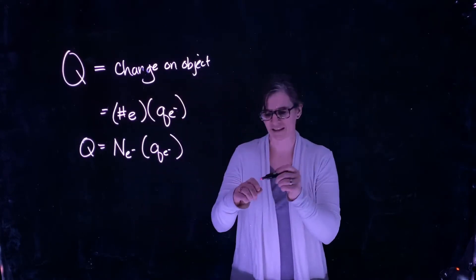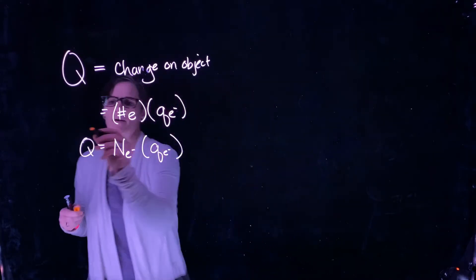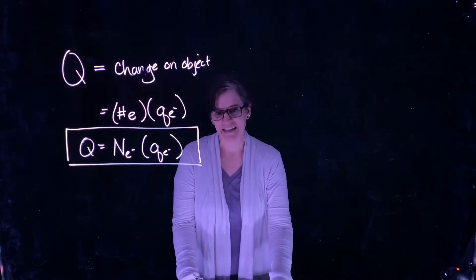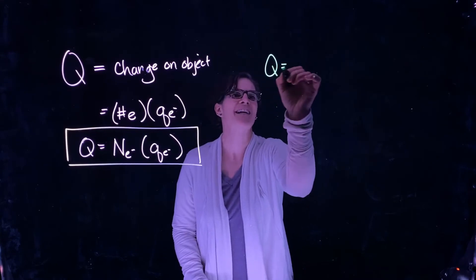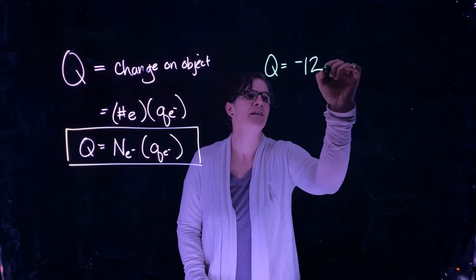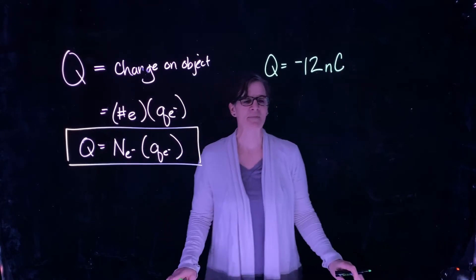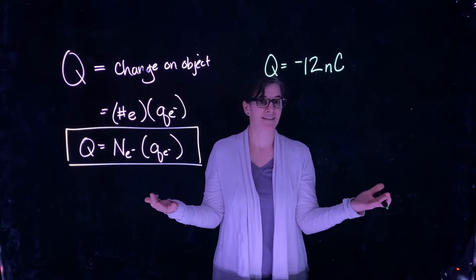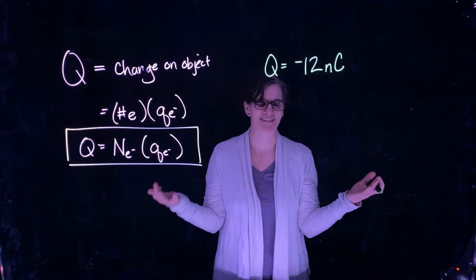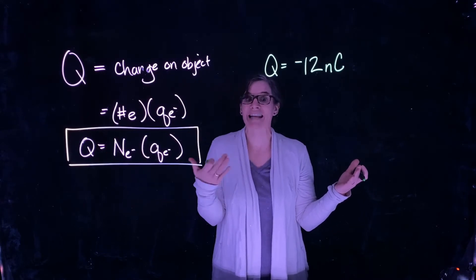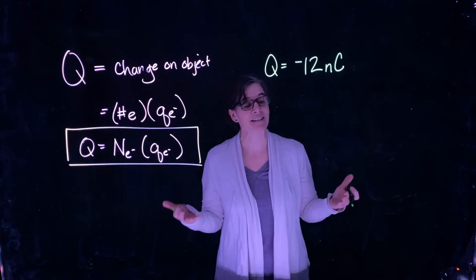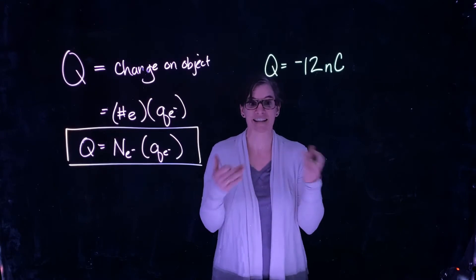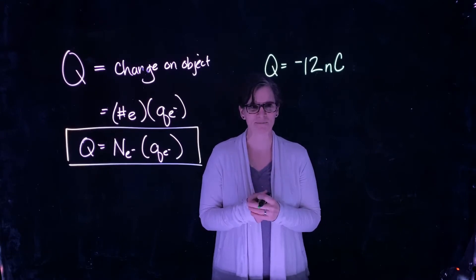Let's use that relationship to determine how many electrons are on an object if the charge on that object is negative 12 nanocoulombs. First, does that tell us we have an excess of electrons or a reduction of electrons? The charge is negative 12 nanocoulombs, so that tells us it's a negatively charged particle — we have an excess of negative charge, an excess of electrons on this object.